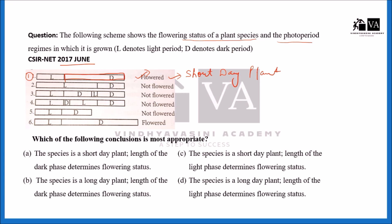In the second case, when the light duration is more and the dark period is less, it does not flower — it remains vegetative. So it is the case of a short day plant. In the third case, with alternating light and dark periods, it remains vegetative — also showing it is a short day plant. In the fourth case, light, dark, light, dark — it remains vegetative, also showing it is a short day plant.